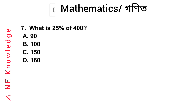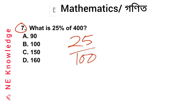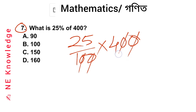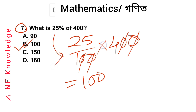Question number 7: What is 25% of 400? 25% means 25/100. So 25/100 × 400 = 100. The answer is 100.